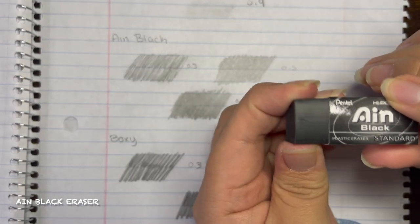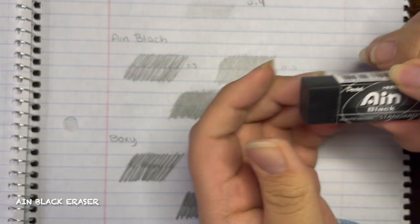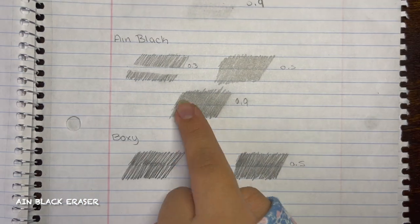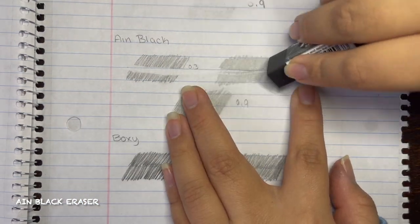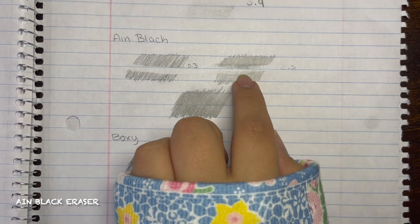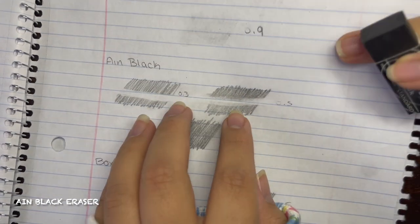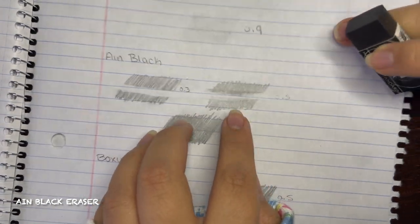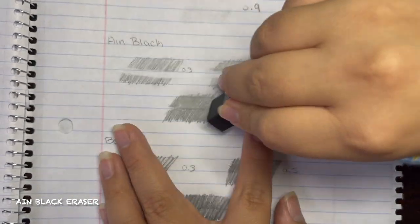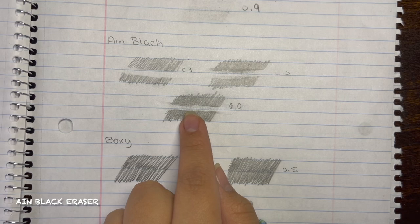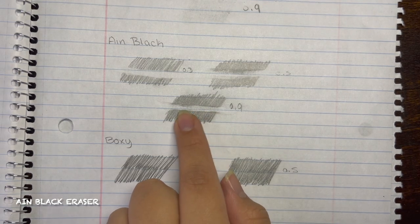So when I erased the 0.3 it came out really clean, but the 0.5 and the 0.9 did not come out clean. It was streaky and it still left a lot of lead behind, so this was kind of a big disappointment. And it also says it's supposed to have less dusting, but I feel as though it takes the graphite and just smears it. So I don't think it did such a good job at having the least amount of dusting.